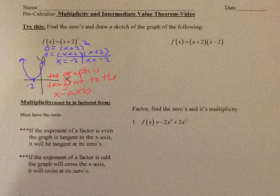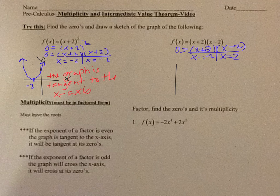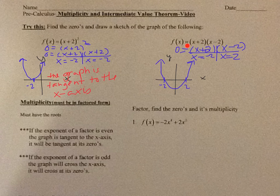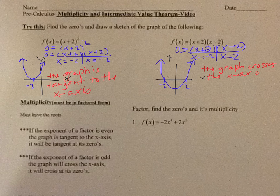Now let's take a look at the next one. We have f(x) = (x+2)(x-2). Setting equal to zero, I get x equals negative 2 and x equals 2. Draw a sketch — put it in your calculator. We have a zero at negative 2 and a zero at 2, so the graph crosses the x-axis 2 times. The factors have an exponent of 1 each — those are odd exponents. When the exponent is odd, the graph will cross the x-axis at those zeros.